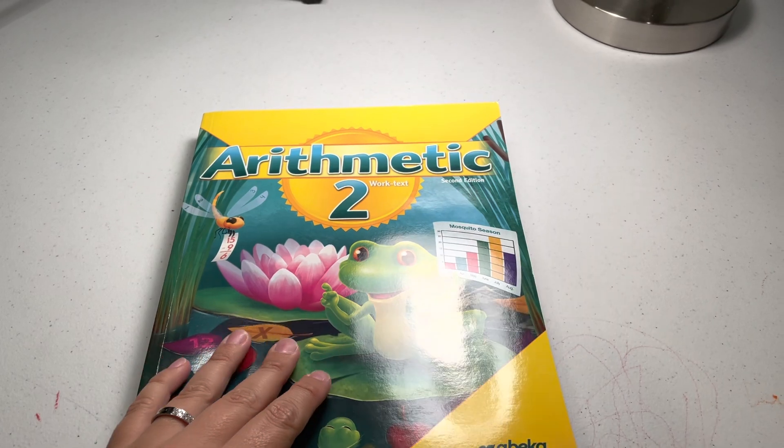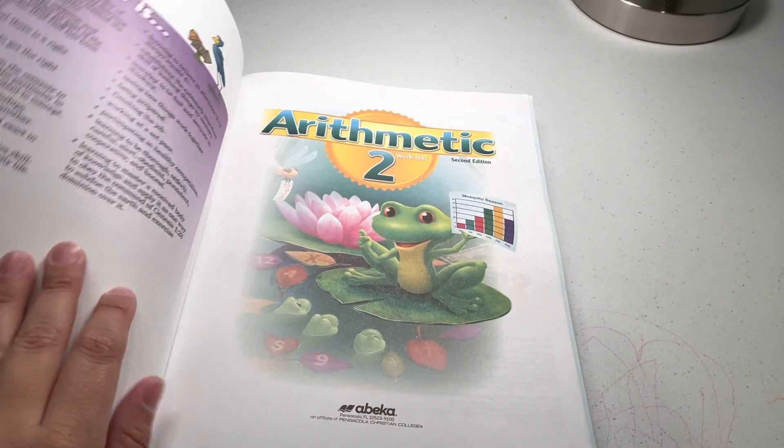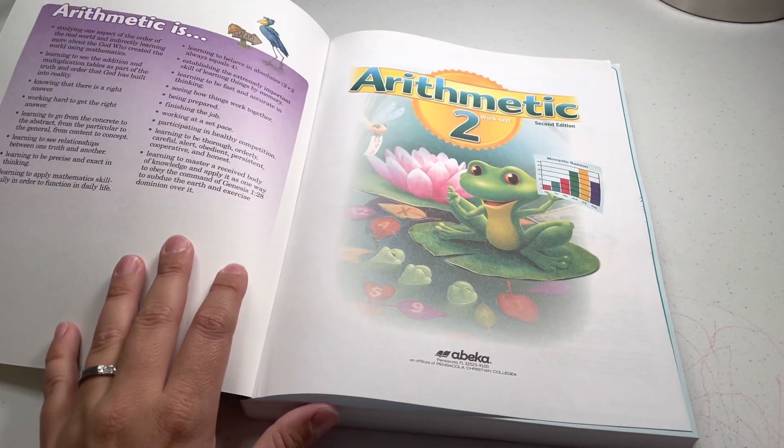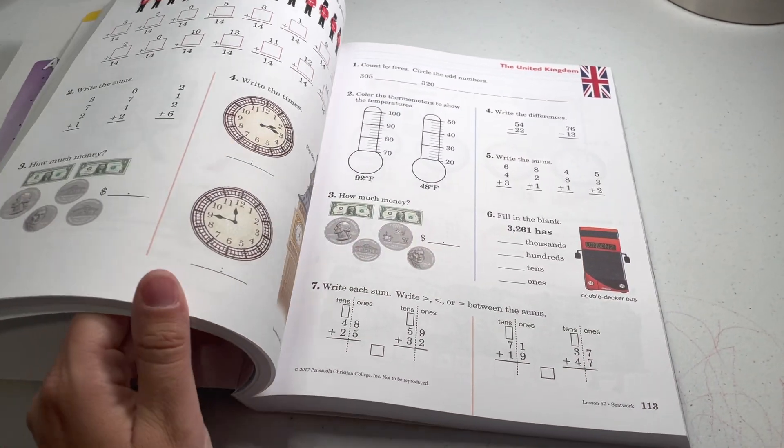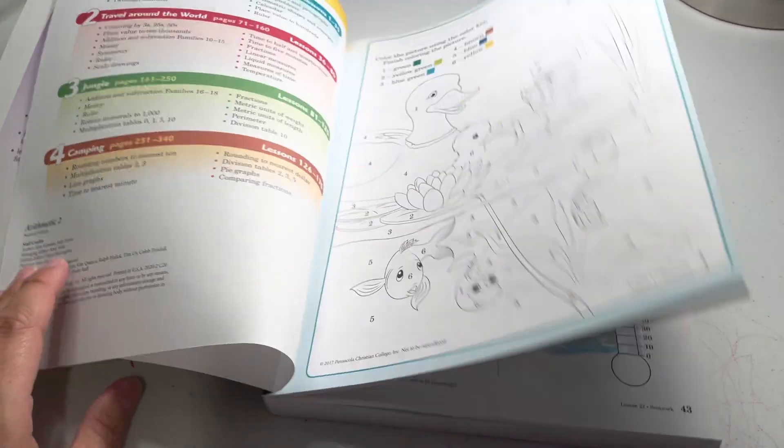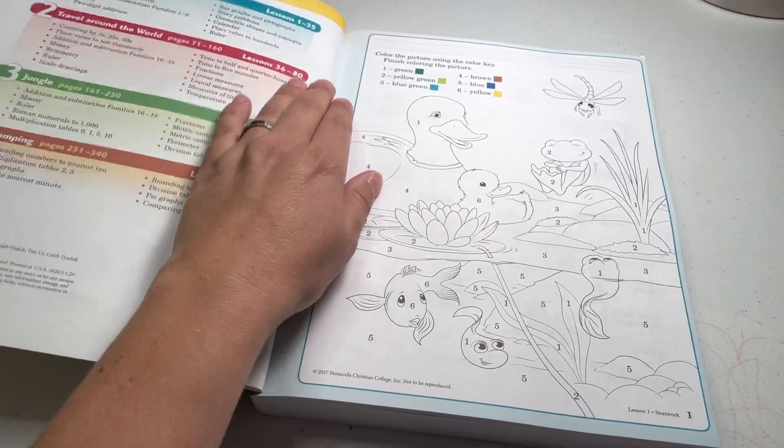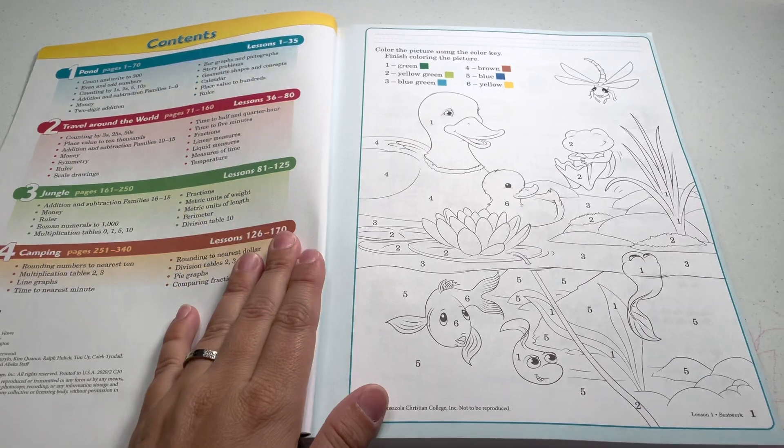I think it's like $27 to $30 on their website. And you buy the teacher key if you want the answers. It would be basically identical to this, but it would just have the answers. And then they sell the lesson plans and all kinds of other stuff too, like flashcards and different things.